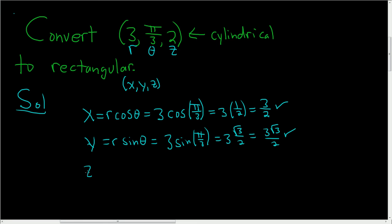And now the best part. z is actually just equal to z. And so in this case, z is equal to 2. And so now we are done. We have found the rectangular coordinates of this point, which was originally given in cylindrical coordinates. It's x, y, z. So 3 halves, 3 square root of 3 over 2, 2. And that's it. Thank you.